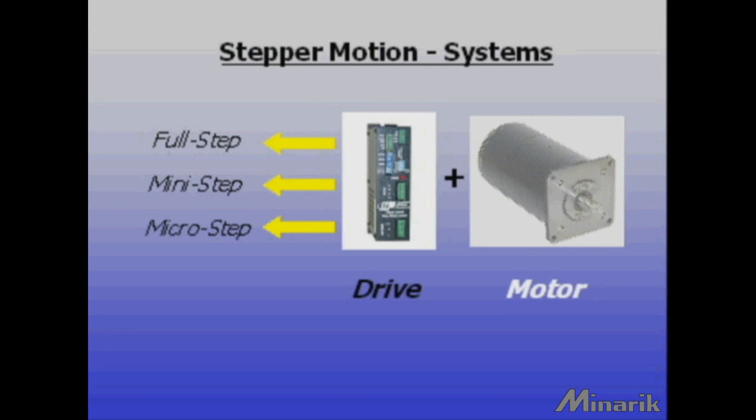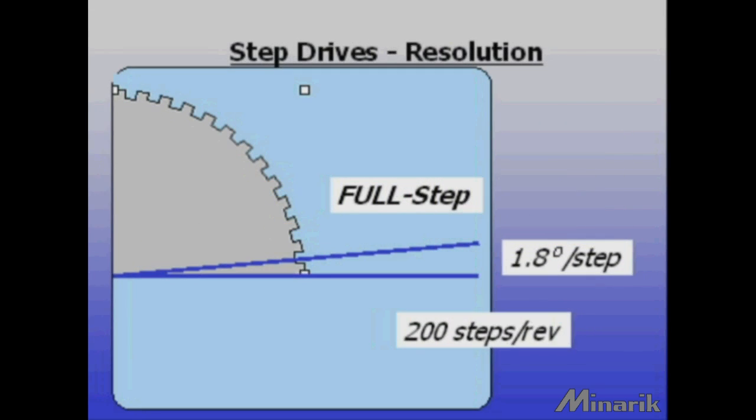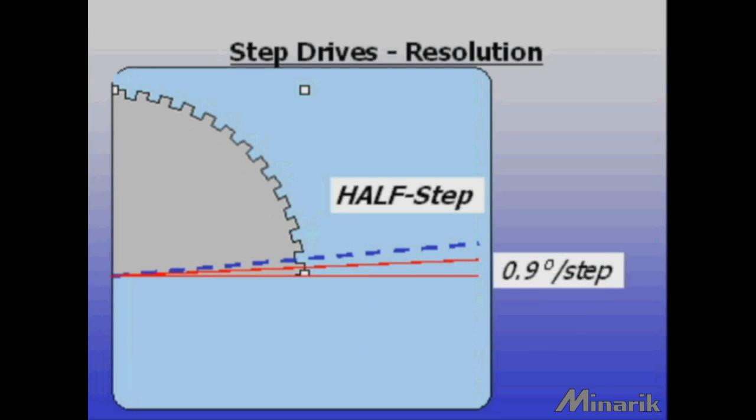However, stepper drives can manipulate this to accomplish coarse or more precise movement. Full step drives can only make a standard motor turn 1.8 degrees at a time. Half step drives can divide these electronically into half steps of 0.9 degrees or 400 steps in one revolution.